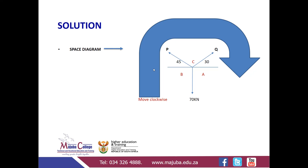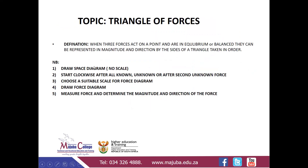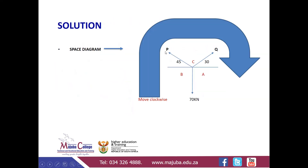The solution follows the five steps. Number one: draw a space diagram, not to scale. You can see I've drawn the space diagram — I've replaced the original line with the two forces P and Q, with P inclining at 45 degrees and Q at 30 degrees. The space diagram is now complete. Drawing it is worth about two marks.